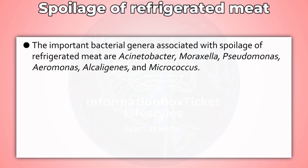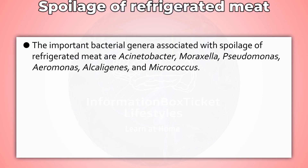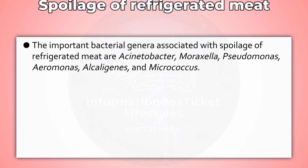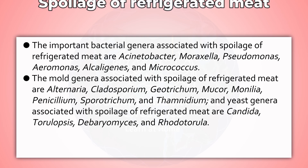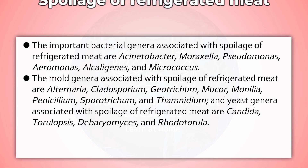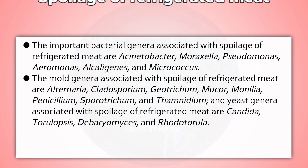The important bacterial genera associated with spoilage of refrigerated meat are Acinetobacter, Moraxella, Pseudomonas, Aeromonas, Alkaligenes, and Micrococcus. The mold genera associated with spoilage of refrigerated meat are Alternaria, Cladosporium, Geotrichum, Mucor, Monilia, Penicillium, Sporotrichum, and Thamnidium. Yeast genera associated with spoilage of refrigerated meat are Candida, Torulopsis, Debaryomyces, and Rhodotorula.